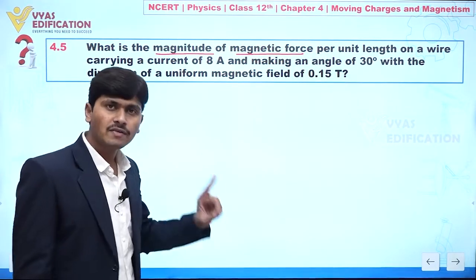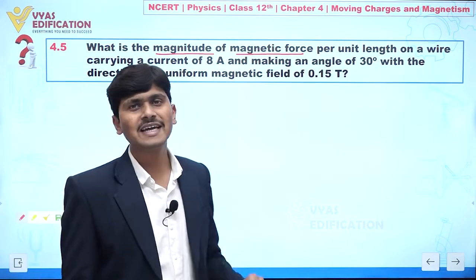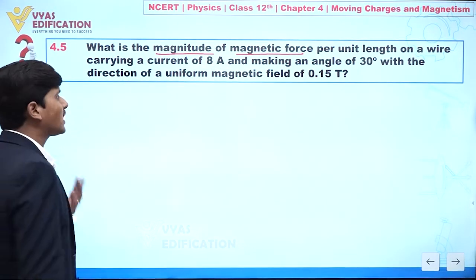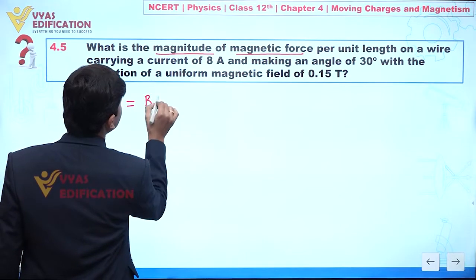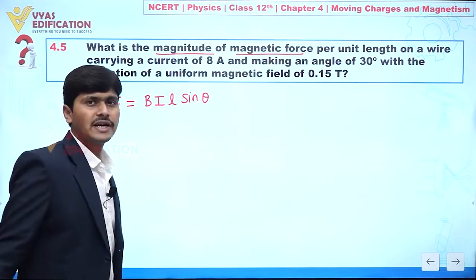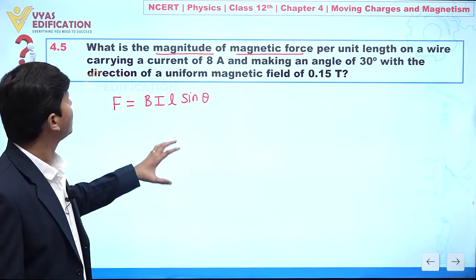Now we can see because we have a current carrying wire, and whenever we place that current carrying wire in a magnetic field, it will feel a force. So we can say the value of that force is given by BIL sin θ, where θ is the angle between magnetic field and the current.